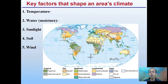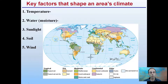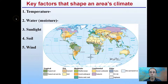The key factors that shape an area's climate — and here I have an outline of the geographic area of the world and some of the typical climates we might be familiar with or associate with different areas — are temperature, water or moisture content, sunlight, soil, and wind.